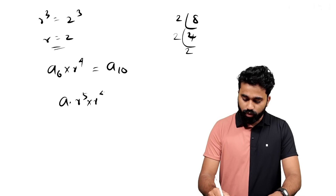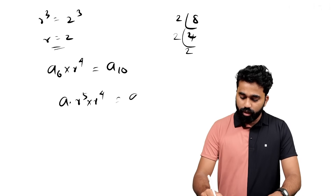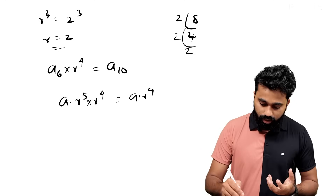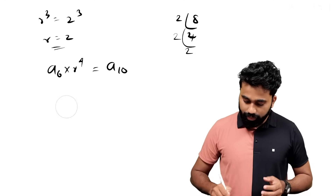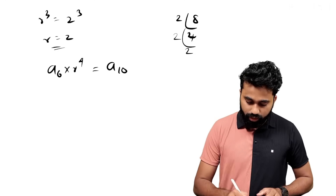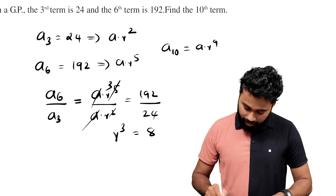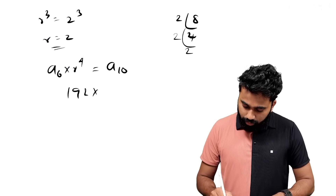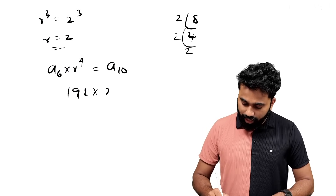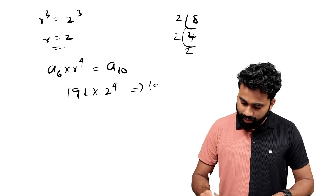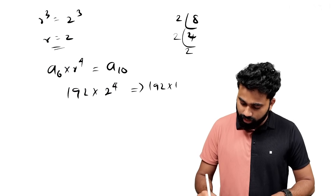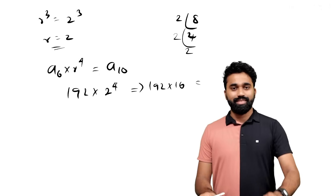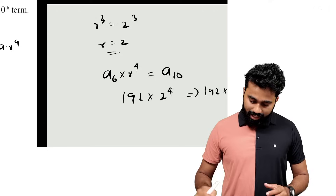That is a into r raised to n. This is a symbol idea. If you want to write a10, that is a6. It is a152. 192 into r raised to 4. That is equal to 192 into 16. This is the answer. This is the same idea.